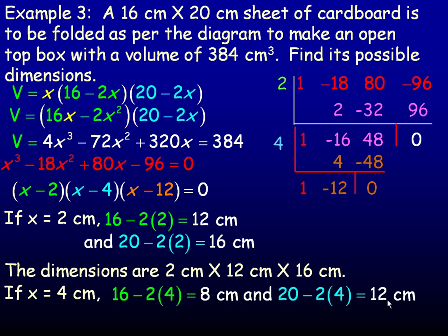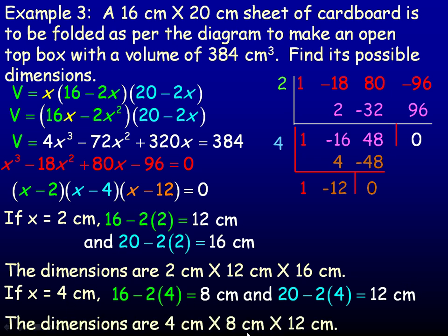So 12 could be a possible length of the box. So possible dimensions are also 4 by 8 by 12. And 4 times 8 times 12 is also 384 for a volume.